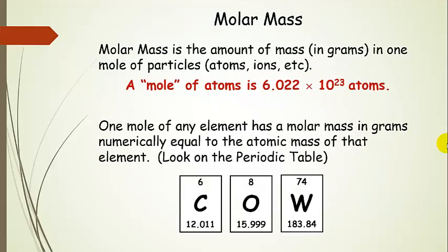Now let's talk about something called the molar mass. This is something we can actually use in the lab — a way to get a certain number of atoms of some compound or element. The molar mass is just the amount of mass in grams in one mole of particles. One mole of any element has a molar mass in grams equal to the average atomic mass shown on the periodic table.